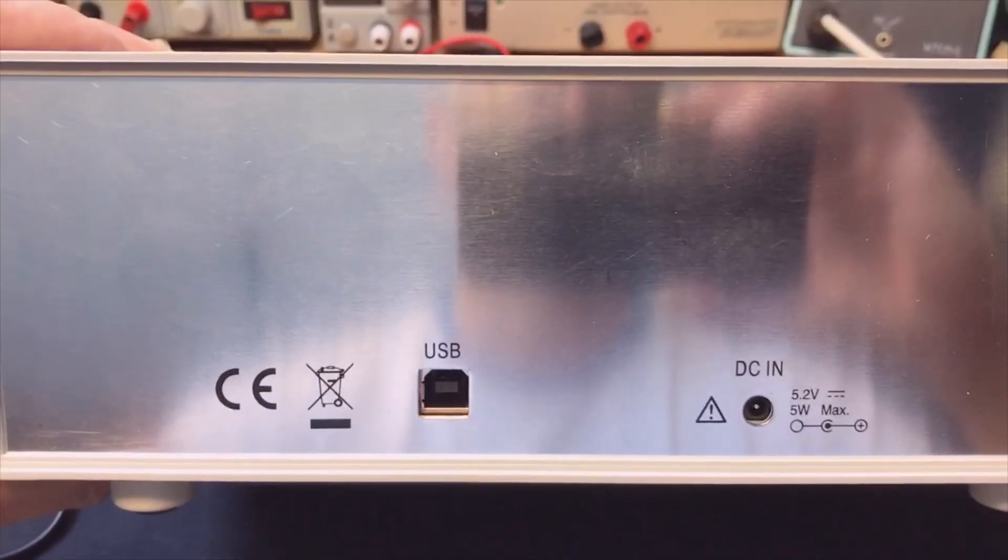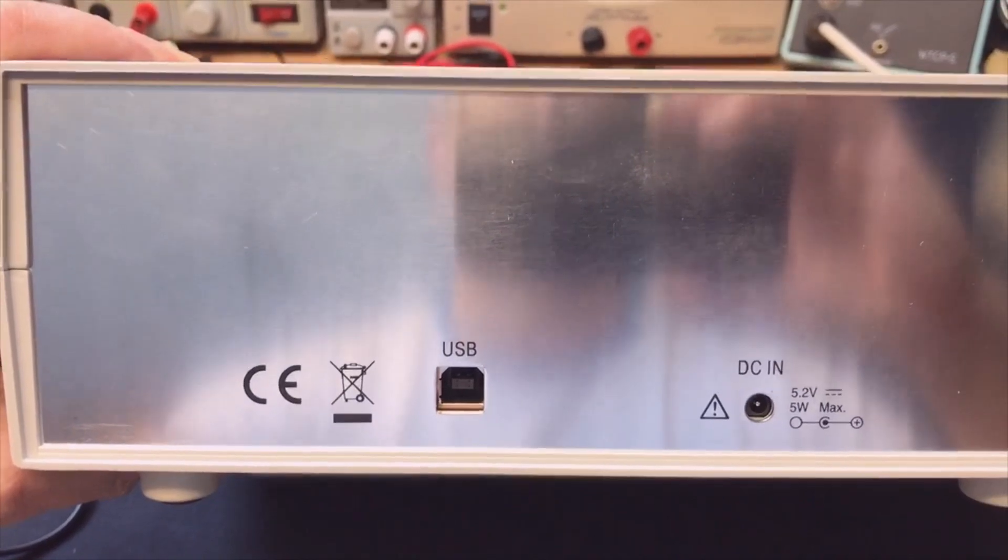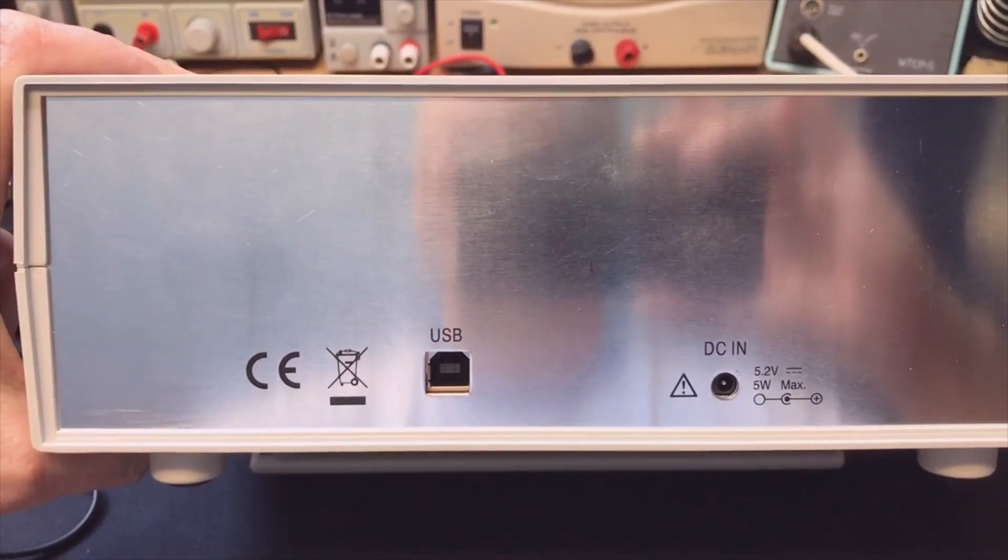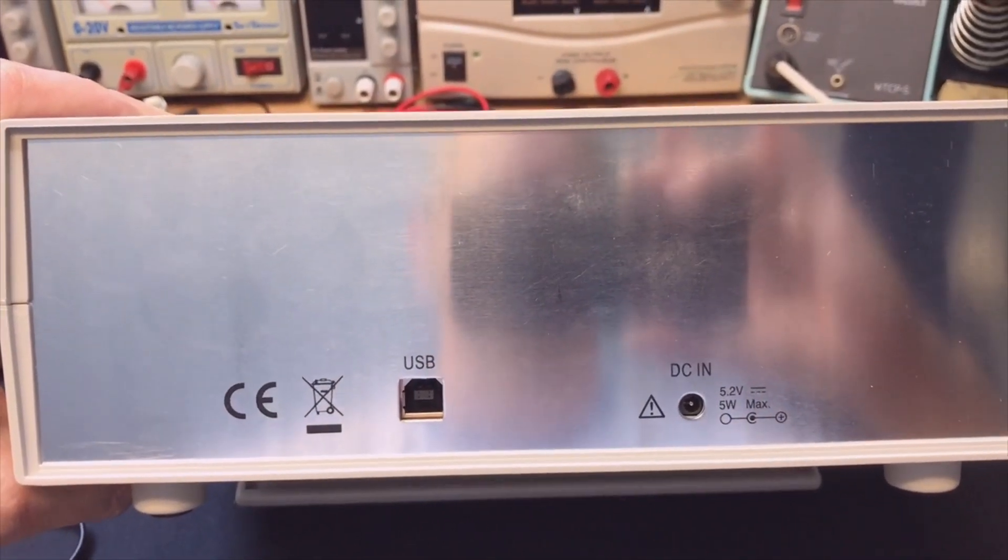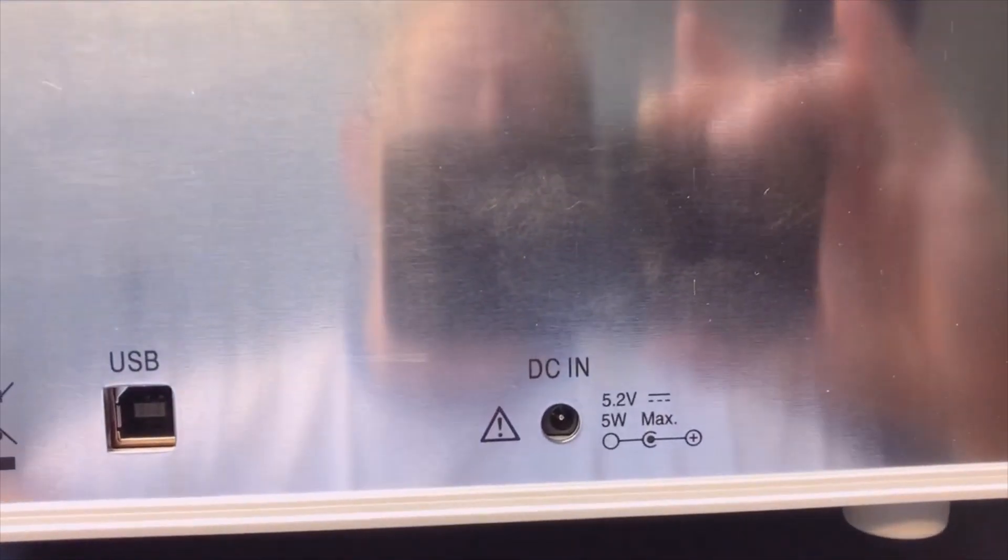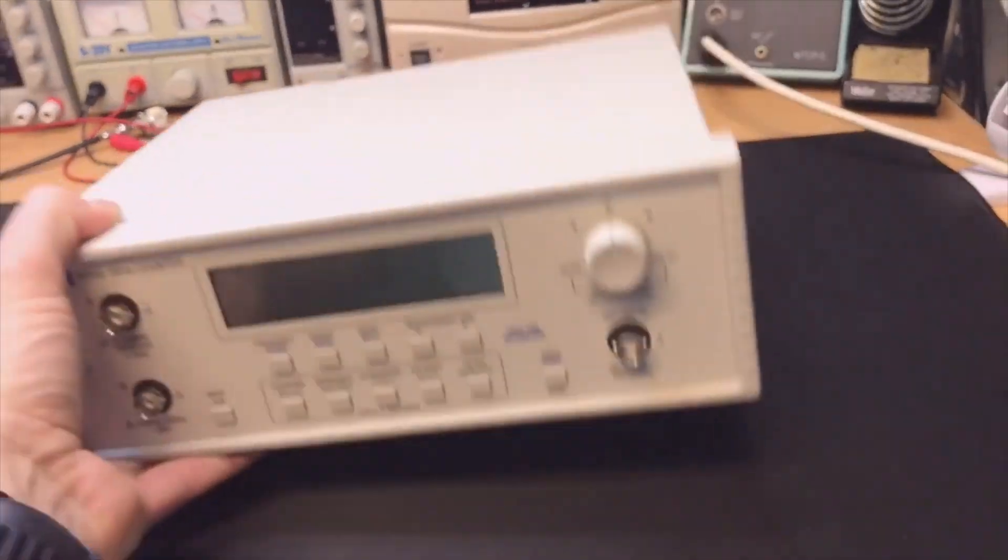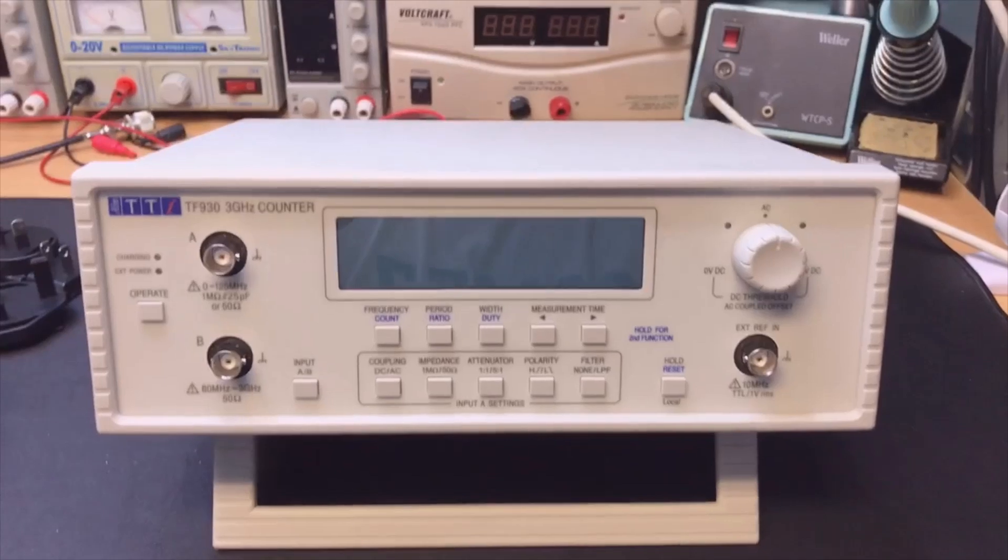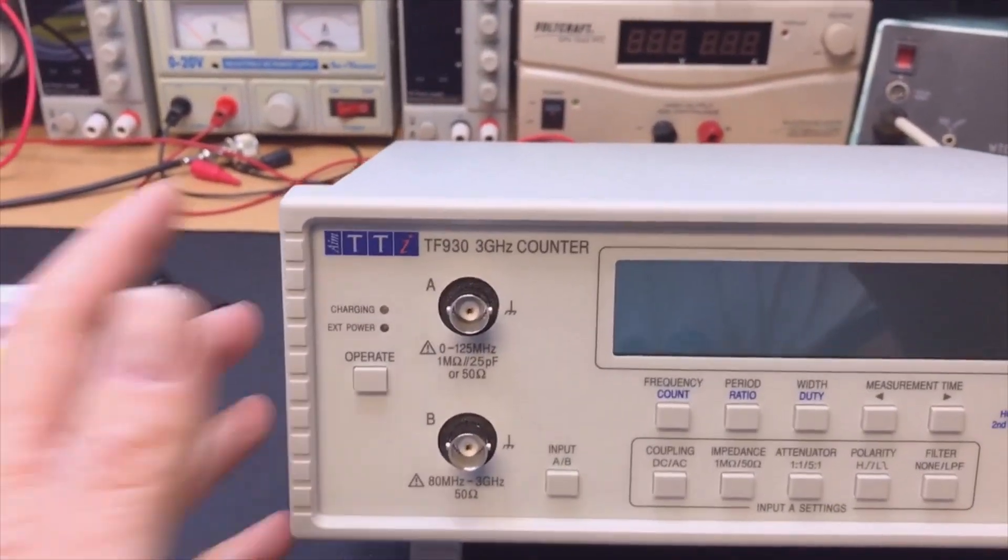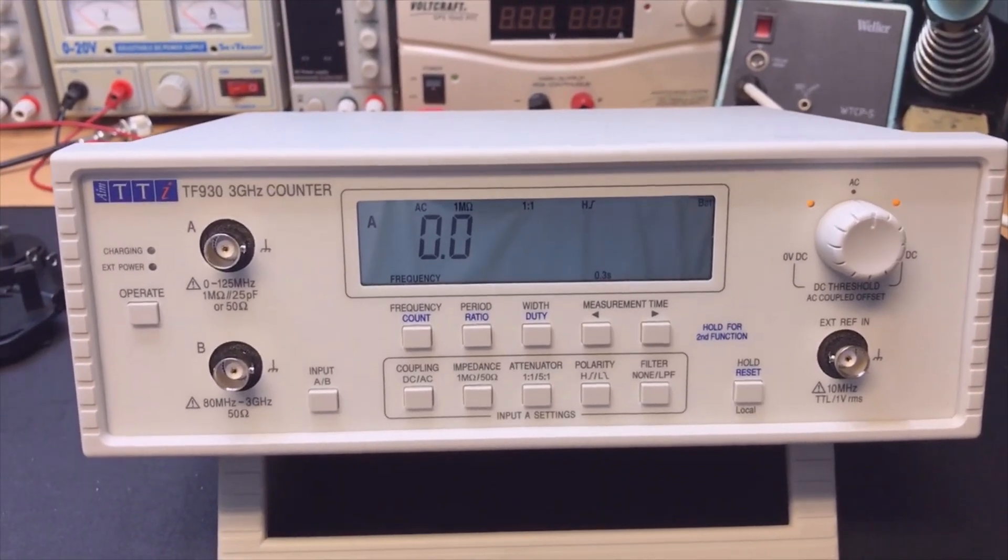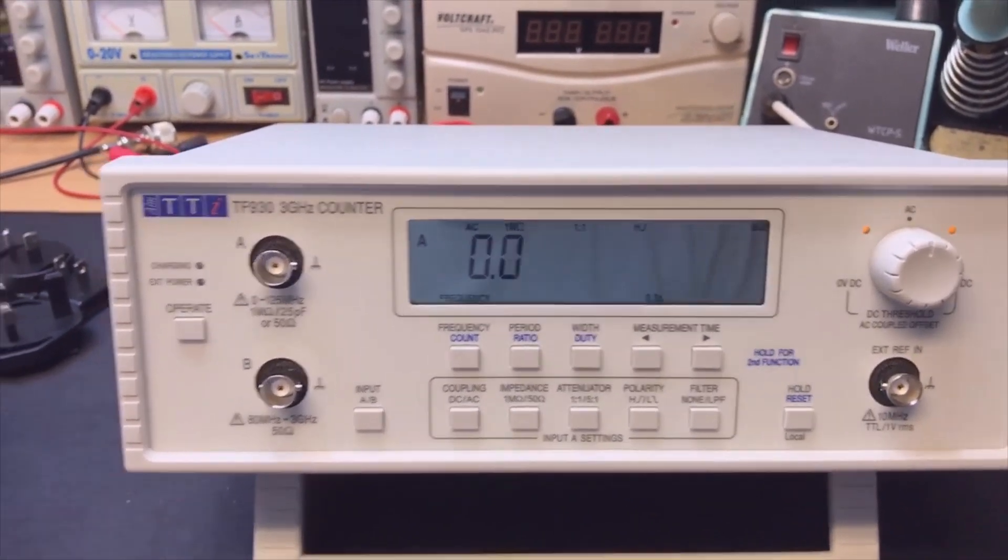In the back, there's a USB connection so you can probably send commands. Not sure if it came with software - I don't think so, it's probably just standard USB. Here is the power in, 2 amps seems a lot for a counter. Okay, so we have two inputs. Oh cool, there's a battery - it just powers on immediately. I didn't even connect the power supply. That's very nice for portable use.